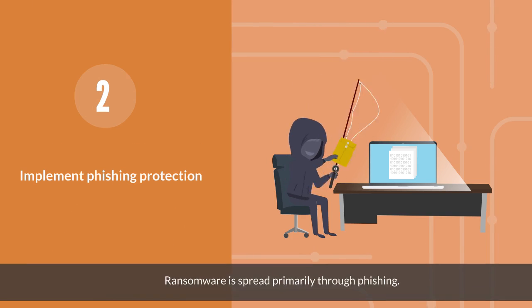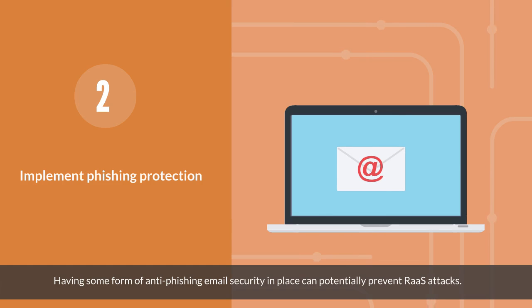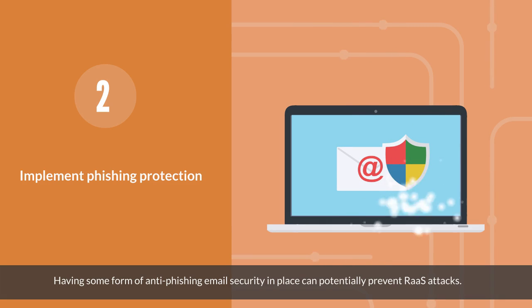Second, implement phishing protection. Ransomware is spread primarily through phishing, so having some form of anti-phishing email security in place can potentially prevent RaaS attacks.